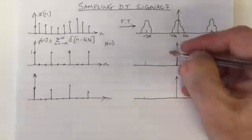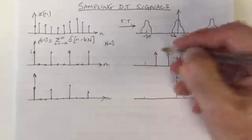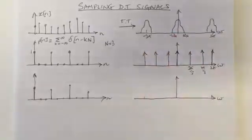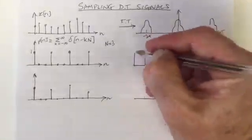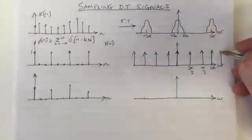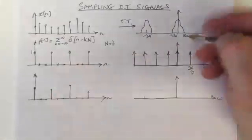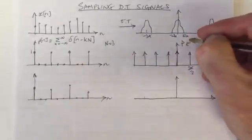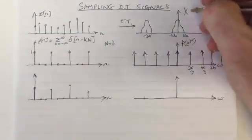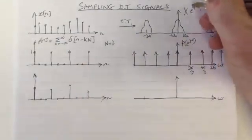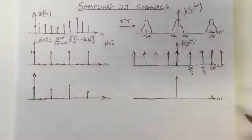And, of course, they're symmetric. And they repeat. So the delta functions repeat. So this is the Fourier transform of this, P(e^(jω)), we write, and this is X(e^(jω)), indicating it's a Fourier transform of a discrete time signal.